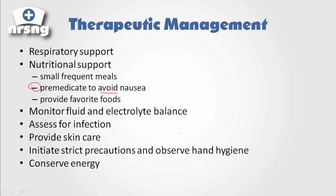We want to assess what their favorite foods are and provide those in small servings. We'll monitor fluid and electrolyte balance to ensure they're getting the nutrients and electrolytes they need. Always be assessing for infection — monitor WBCs, temperature, and heart rate, which goes up with infection — as well as any redness and swelling, all the signs we'll see with infection.